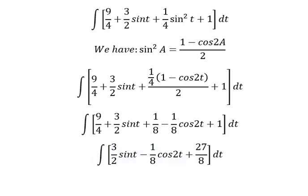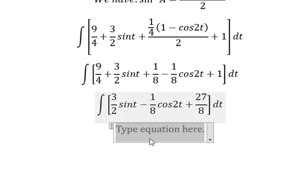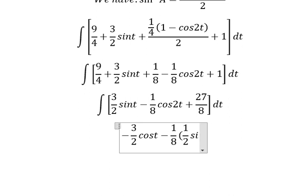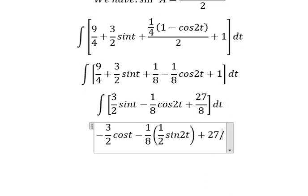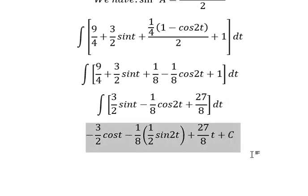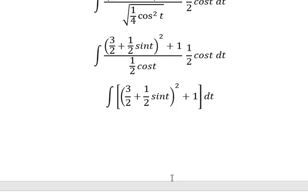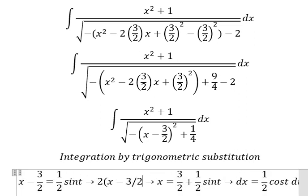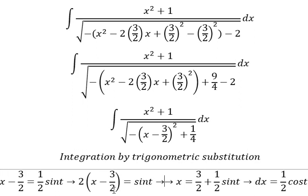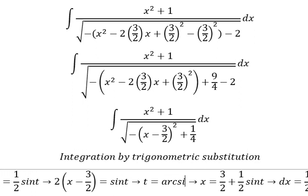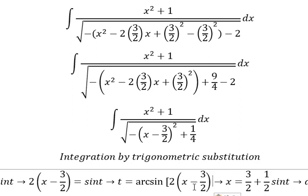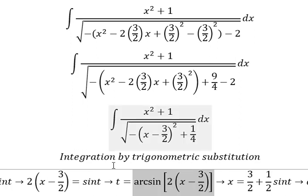Now we have the final answer. The integration of sin T is about negative cosine T, the next one is about one over two sin 2T, and the next one is about T plus C. For T, we multiply both sides by two and have T equals the arc sine of this one.